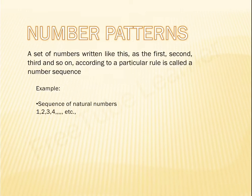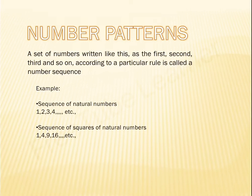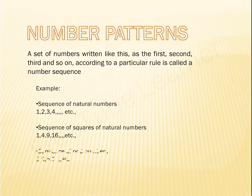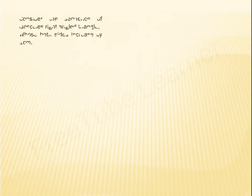Let us look at one more example: the sequence of squares of natural numbers. One squared is 1, two squared is 4, three squared is 9, four squared is 16. So the sequence is 1, 4, 9, 16. Let us look at one more example: the sequence of odd numbers — 1, 3, 5, 7, and so on.